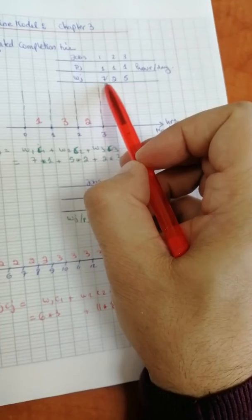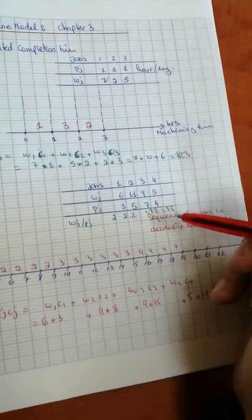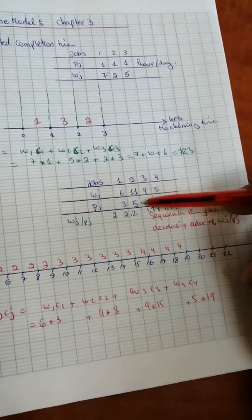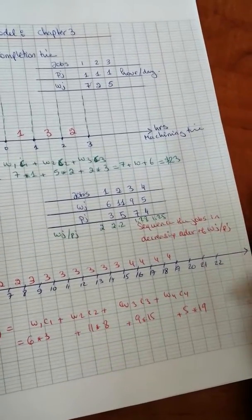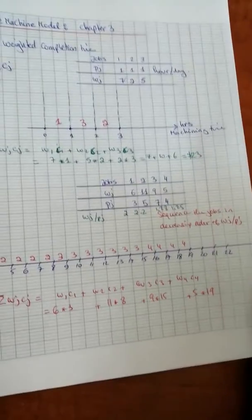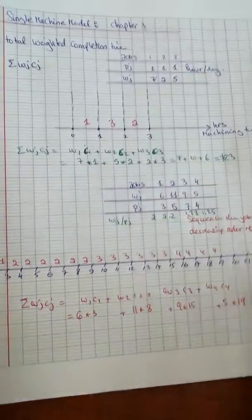So if we have equal processing times, we start with the largest weight. If we have different processing times and weights, we sequence them in decreasing order of wj/pj. If you have any questions, please write to my email address available in the box below.